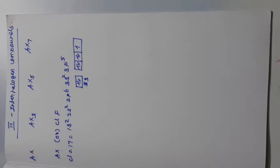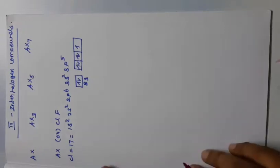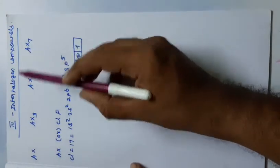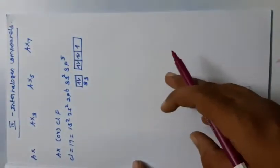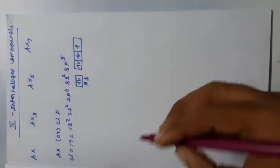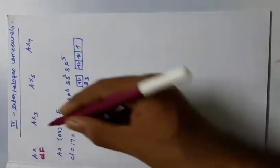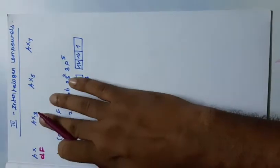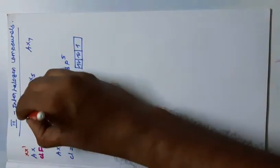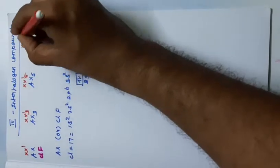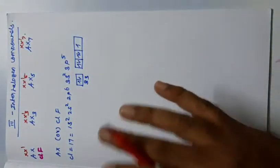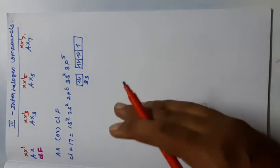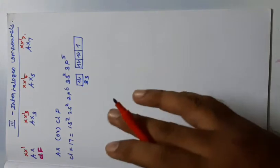Hello students. In the last videos we discussed the oxo acids of sulfur and phosphorus. The next topic is interhalogen compounds. Interhalogen compound means each halogen is connected with another halogen to form a compound. For example, CLF where CL is A and F is X. In state board syllabus they are given as AX, AX3, AX5, AX7. In CBSE they are given as XX', XX'3, XX'5, and XX'7. Both are the same — the symbolic representation may be different.